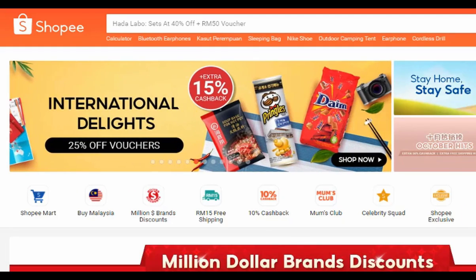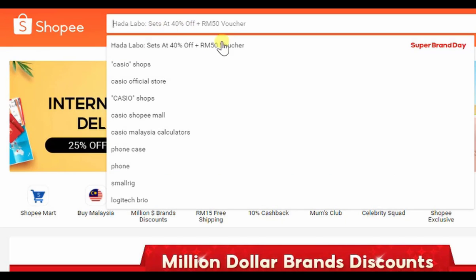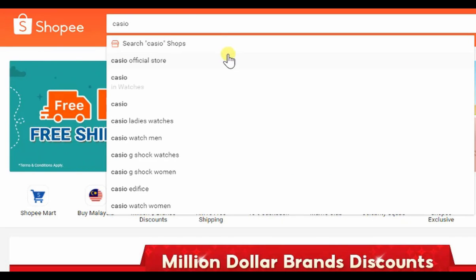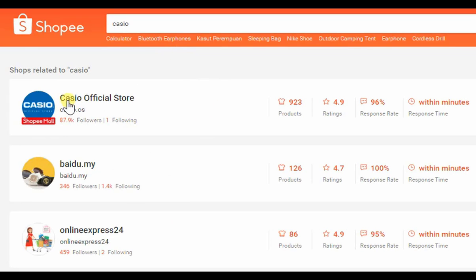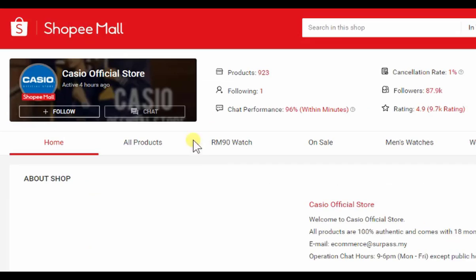As long as you key my voucher code here. I also will provide you a step-by-step guide here. So in order to use the voucher, first you need to go to the Shopee website. And then at the search button over here, you just tap Casio. You should be able to see something like search Casio shop. You click on it and then you should be able to see the Casio official store. And then click on it.